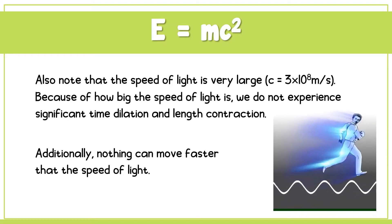Also note that the speed of light is very large. The speed of light is denoted by c and equals 3 times 10 raised to 8 meters per second. Because of how big the speed of light is, we do not experience significant time dilation and length contraction. They are indeed occurring, but it is unnoticed in daily life.